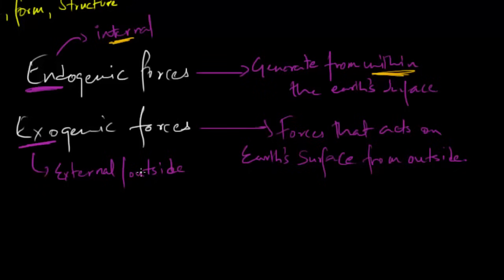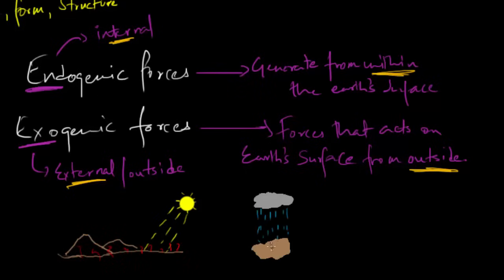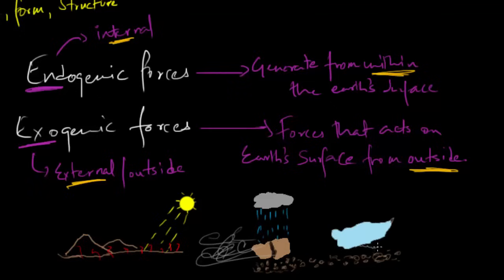Now the other force, the exogenic forces, acts on earth's surface from outside. For example, sunlight is constantly heating up the earth's surface. Then we have rain, which is responsible for weathering of rocks. We have wind, that takes the soil from one place to another. Then we have ice, glacier. When it melts, it is again responsible for carrying the soil from one place to another.